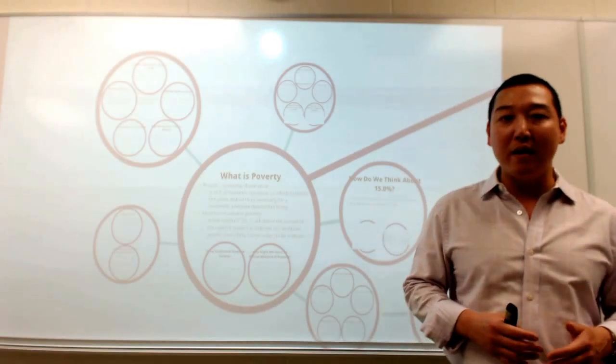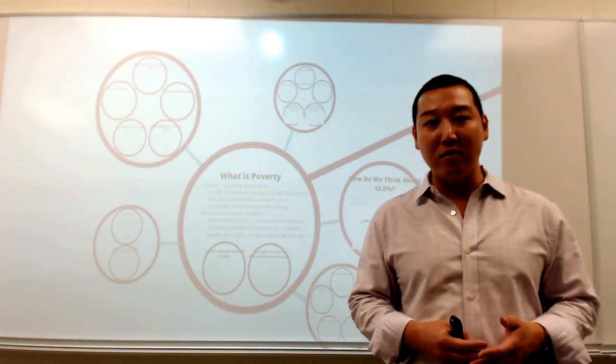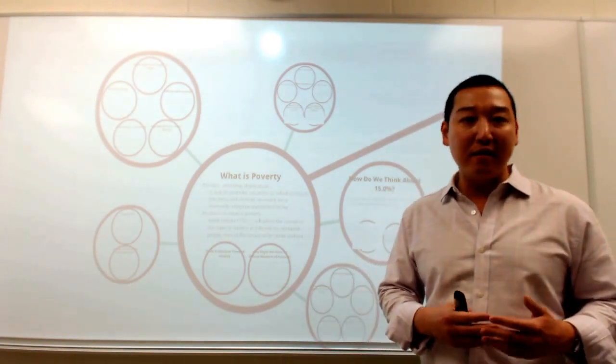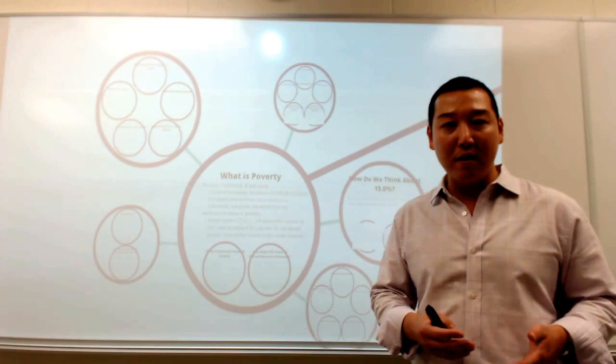Typically the explanations will center on either individual-level factors or structural-level factors. We can make that distinction first. So looking at individual-level explanations, one particular line of explanations will say that people are poor because of genetic differences or more bluntly stated genetic inferiority.